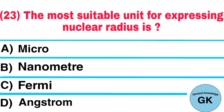Question number 23. The most suitable unit for expressing nuclear radius is: A. Micro, B. Nanometer, C. Fermi, D. Angstrom. Answer: Fermi.